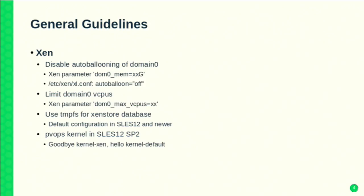Xenstore is an integral part of a Xen deployment. It's a service that maintains state and notifications for the system. The access pattern of the Xenstore database is such that it performs better if it resides in memory, so we recommend running it in memory. This is the default in SLES 12, where the Xenstore database runs in tmpfs. But for SLES 11 users, you can bind-mount the path of the Xenstore database to a RAM disk for much better performance.